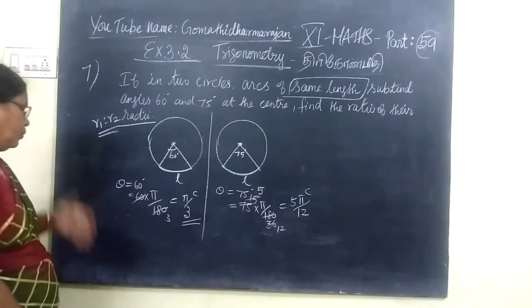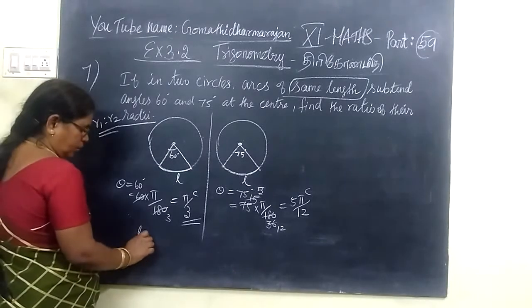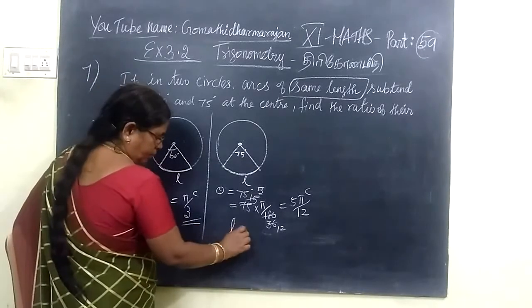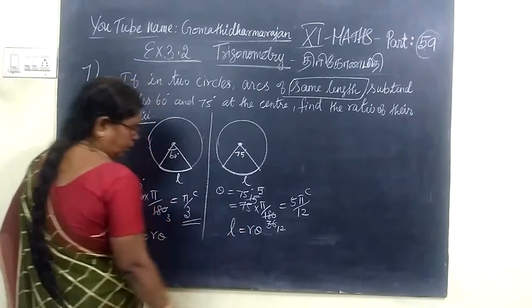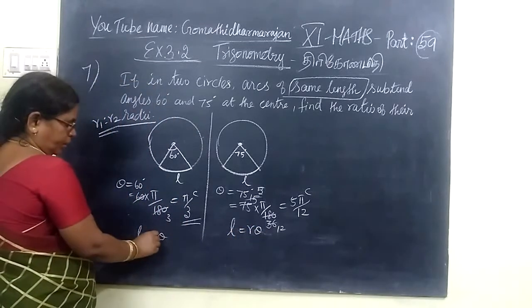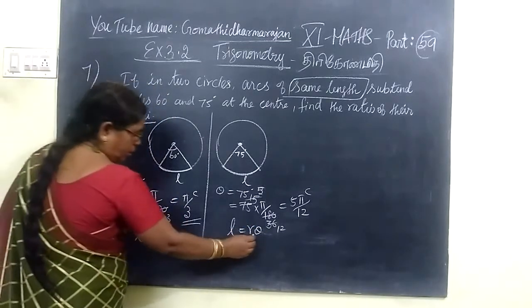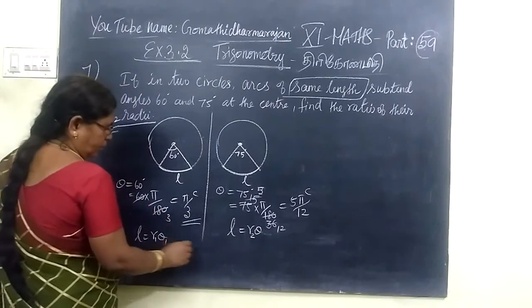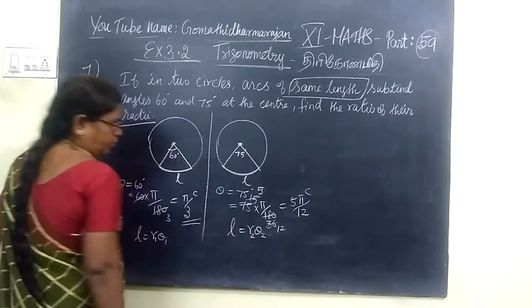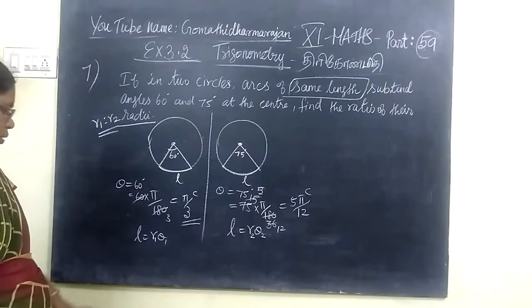After that, you know L equals r times θ. So in these two cases we can write r1 times θ1 equals r2 times θ2. This is θ1, this is θ2, in radian measure.